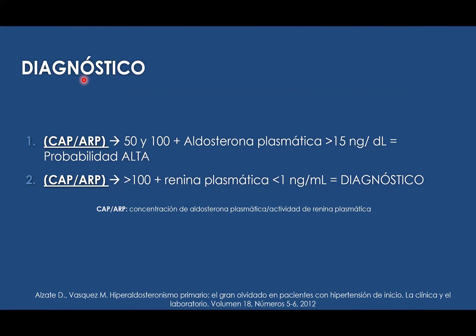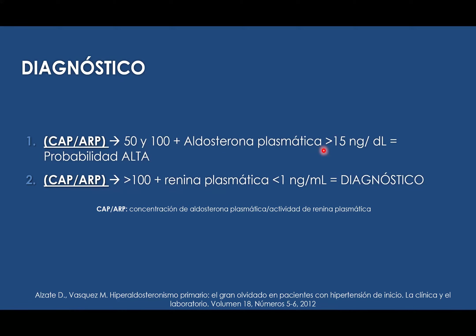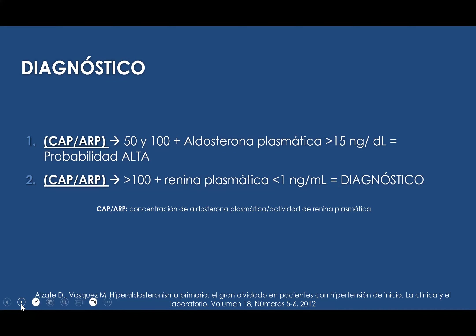Para hacer el diagnóstico tenemos que tener un cociente. El cociente está dado por la concentración de aldosterona plasmática sobre la actividad de la renina plasmática. Si este cociente es mayor de 50 o 100 más la aldosterona plasmática mayor de 15 nanogramos por decilitro, tenemos una probabilidad alta. Sin embargo, si el cociente es mayor de 100 y la renina plasmática es menor de 1 nanogramo por mililitro, técnicamente ya tenemos el diagnóstico de hiperaldosteronismo primario.